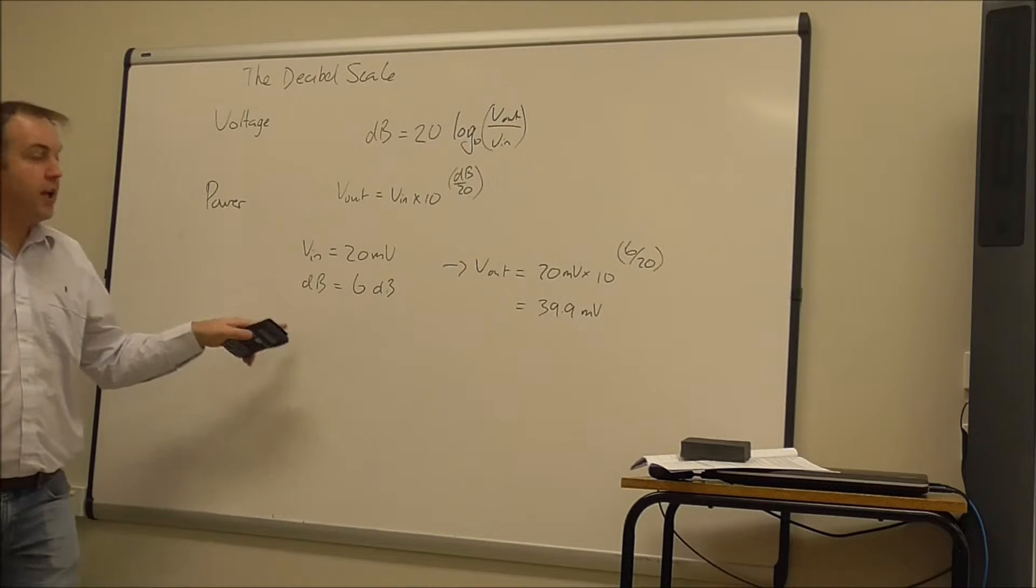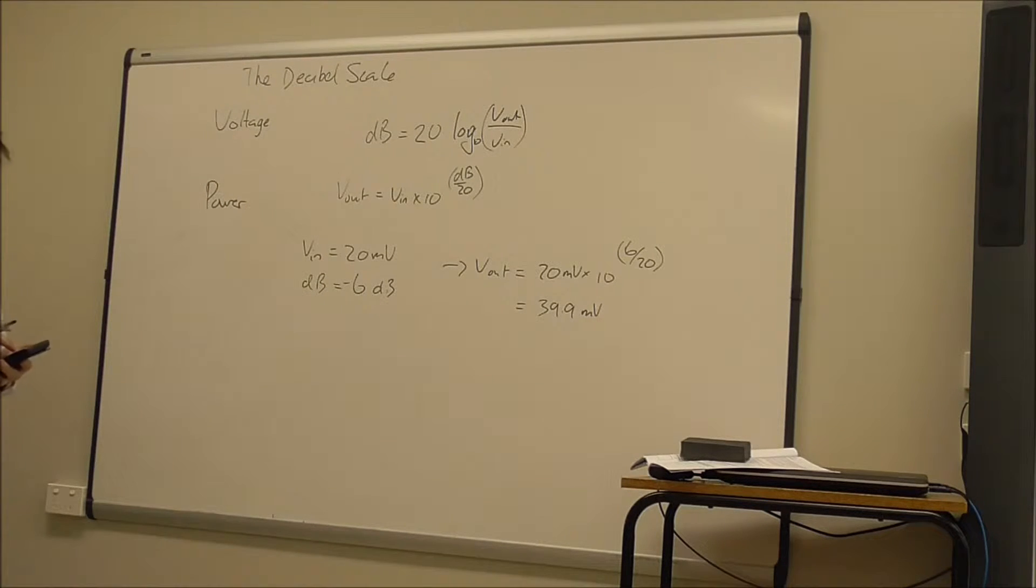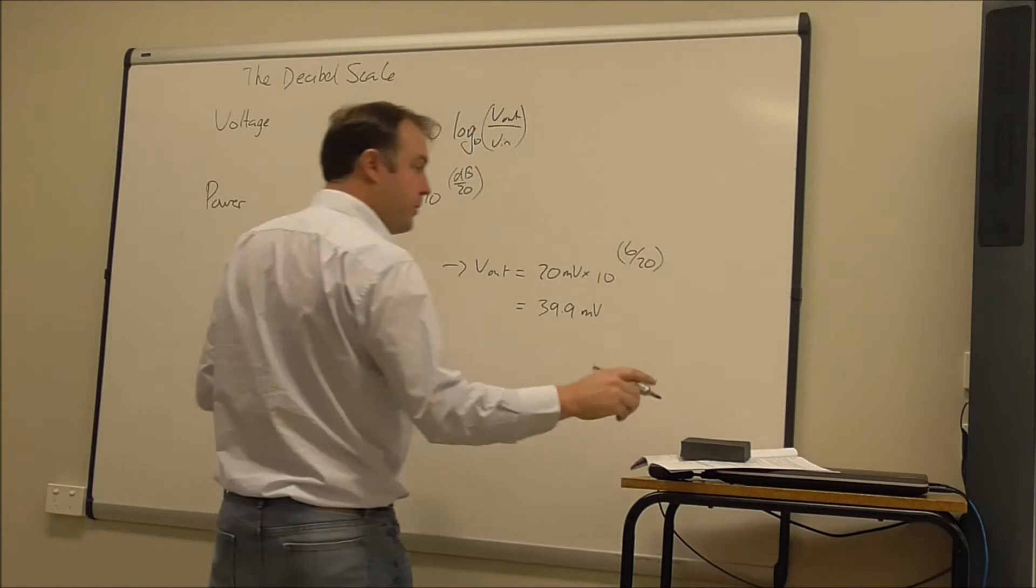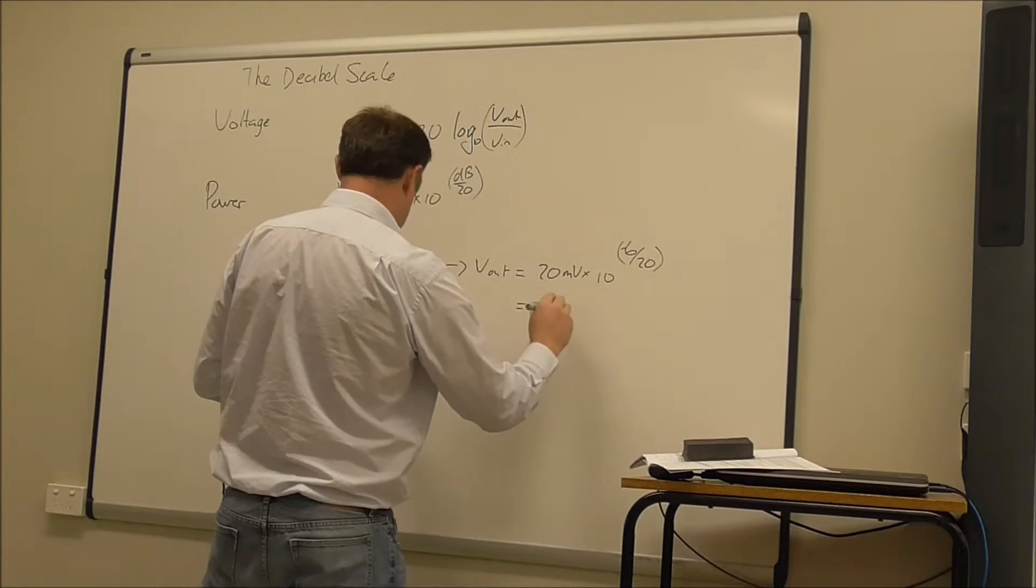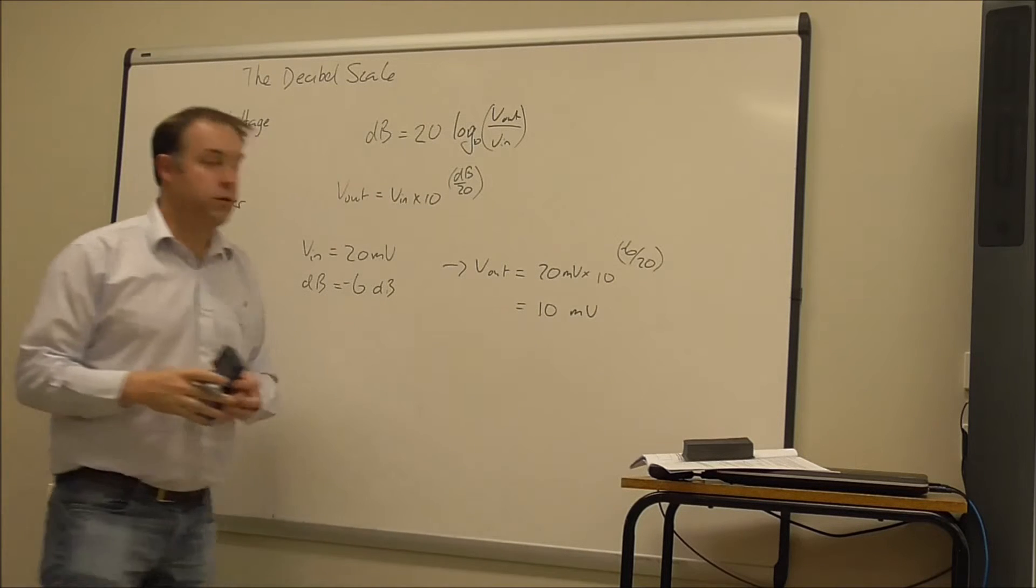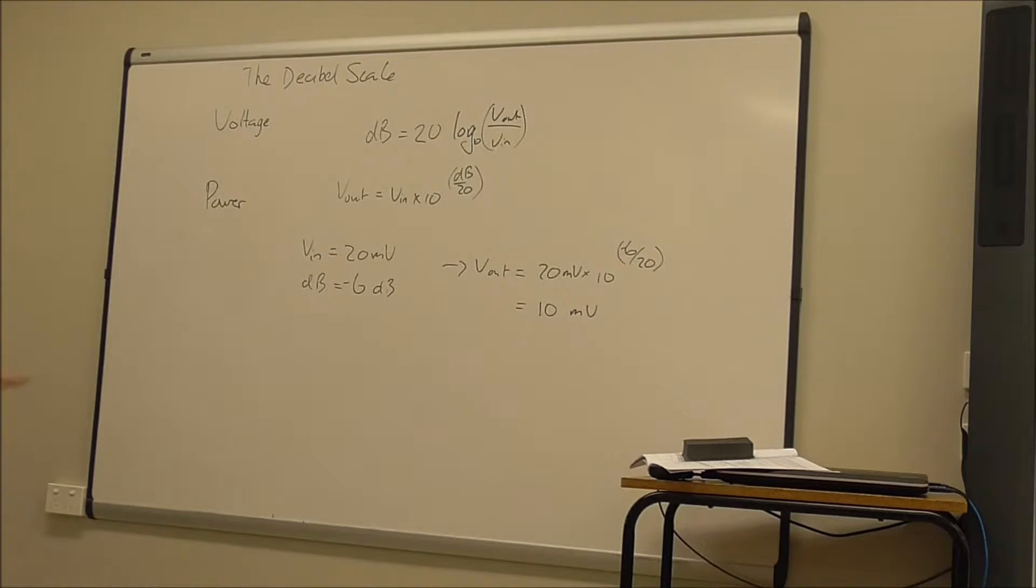If I had a negative gain I do the same thing so let's say I did negative 6 dB instead of positive 6 dB plug that into my calculator so V out would be 10 millivolts. So negative 6 dB halves the voltage. Positive 6 dB doubles the voltage. So I've chosen 6 dB there because it's a nice round number. It may not be that it might be 60 or 18 or something else like that. The same principle applies.